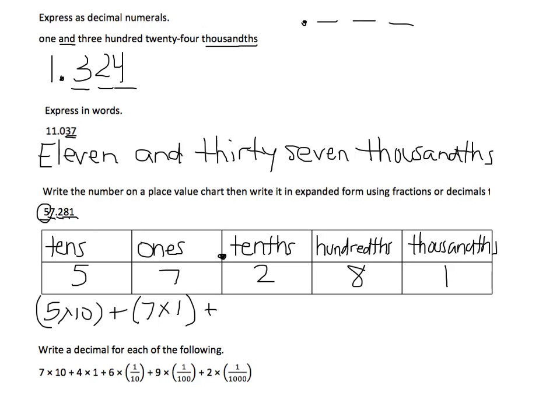I'm going to add that to my tenths place. There's a 2 in the tenths place. And now again I can write this using fractions or decimals. As a fraction, I would write it as 1 tenth. As a decimal, I would do 2 times 1 tenth.